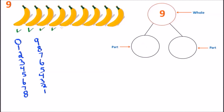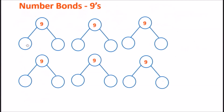Keep counting: one, two, three, four, five, six, seven, eight, and nine — we have the number nine as our total, and the remaining count is zero. So we have a nine on the left and a zero on the right that make up the number nine. We were able to create ten different number bonds that create the whole, which is the number nine.